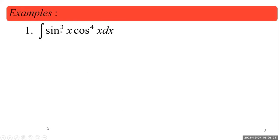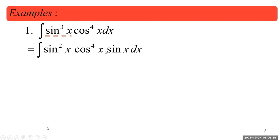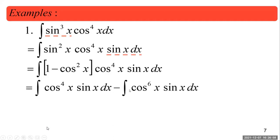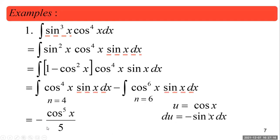For example, sine cubed times cosine to the fourth. Just like rule one, we look at the odd power and focus on that. We split off one, leaving sine squared. Applying the Pythagorean, sine squared becomes 1 minus cosine squared, so everything on the left becomes cosine. The remaining factor is just sine dx. This gives cosine to the 4 times sine x dx minus cosine to the 6 times sine x dx. Applying the power rule — u is cosine x, du is negative sine x — for the first term we need a negative sign, so we supply it. The second term doesn't need a negative sign, giving plus cosine to the 7th x over 7 plus C.